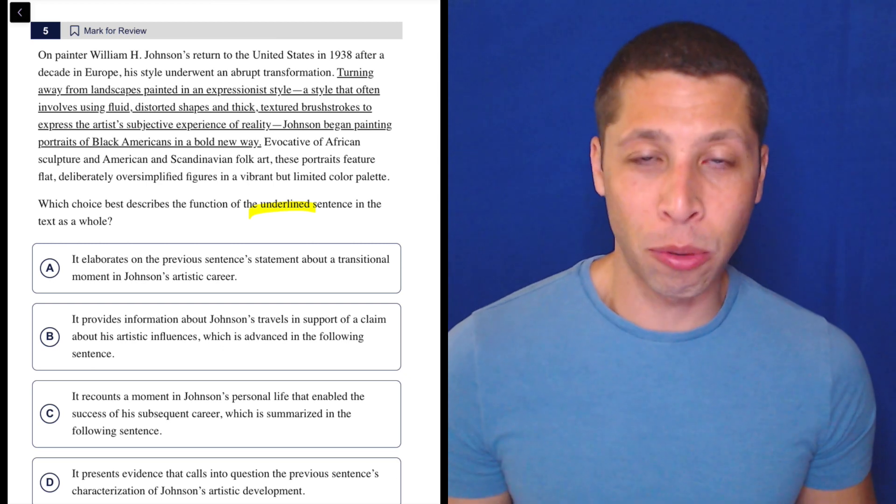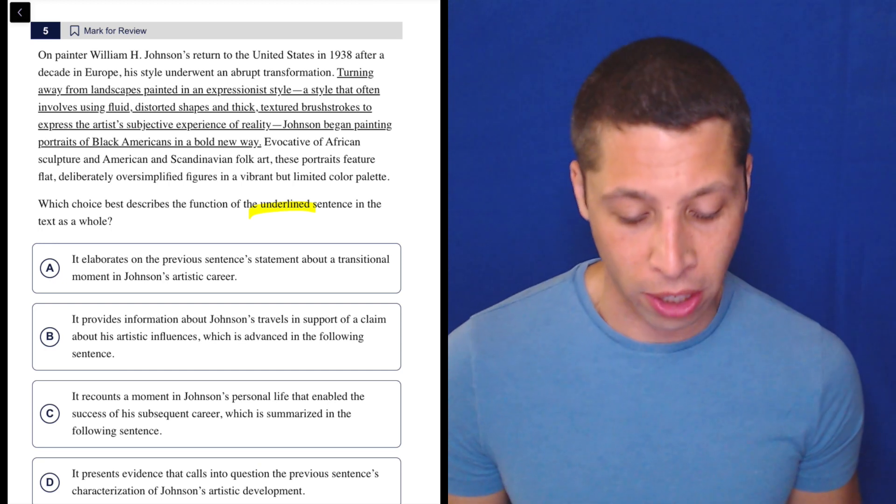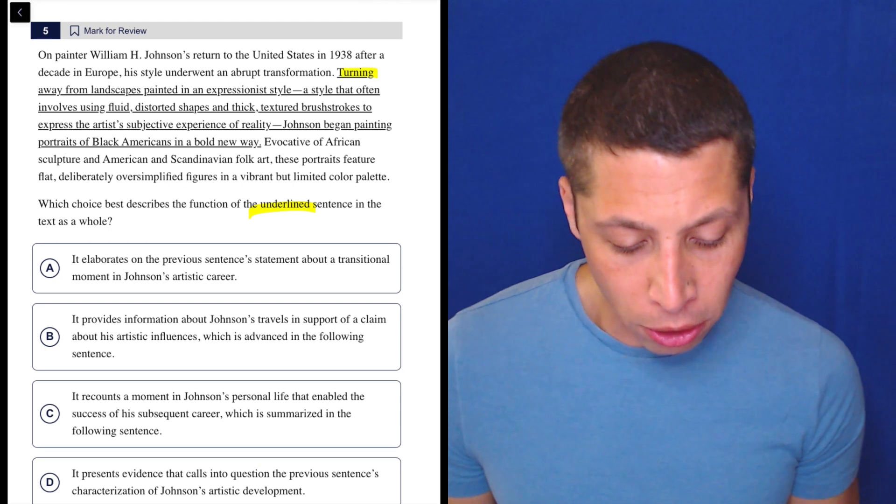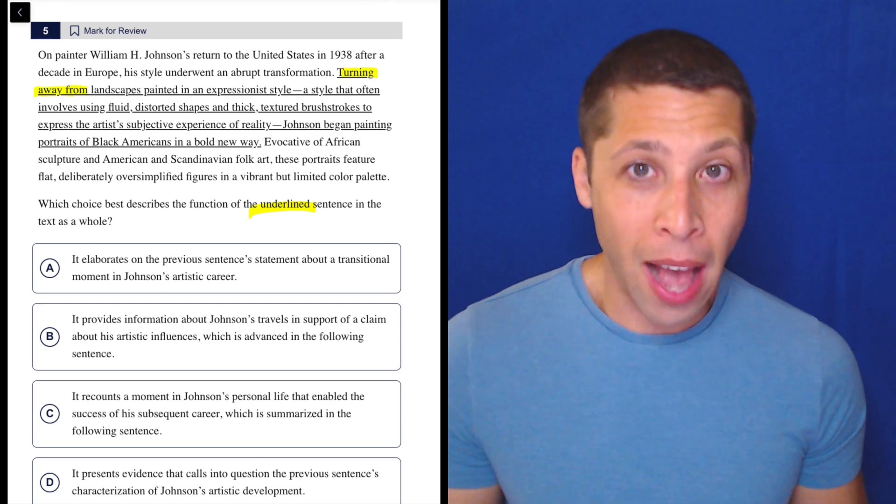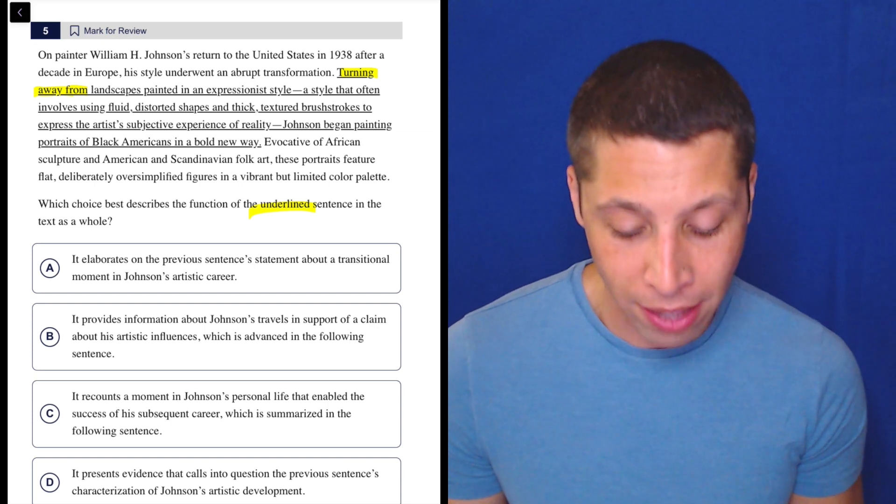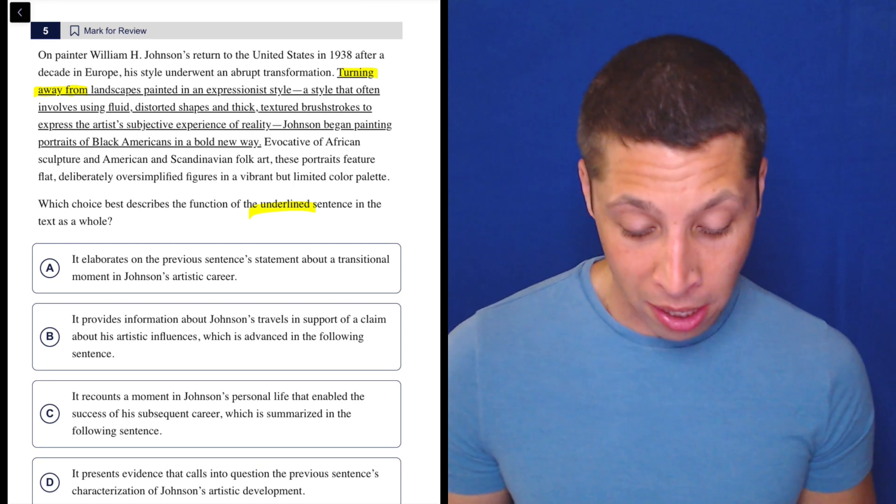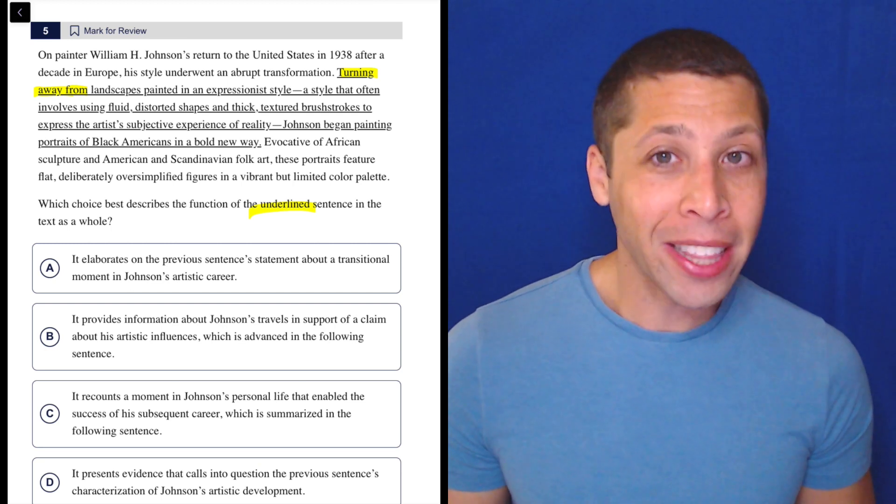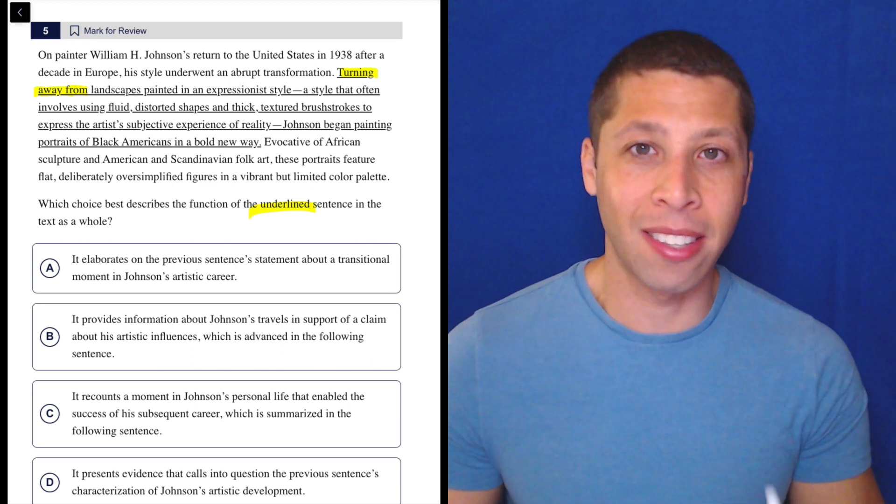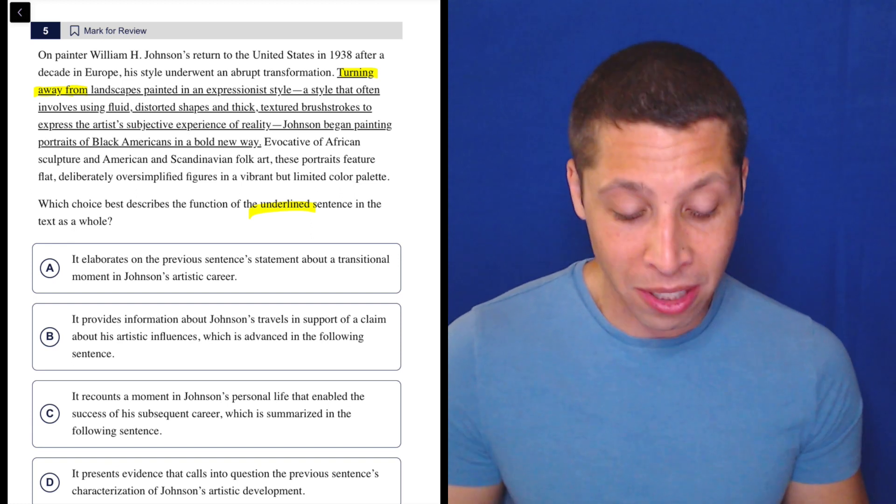Just to be clear, as I was reading that, I was really focused on very specific parts of this whole passage and that underlined portion. Specifically, I kind of ignored the middle and was like, okay, turning away from something, right? So that indicates a change. We did have a transformation mentioned right before that. So that's kind of reiterating that idea. So then we get a long description of his expressionist style, but I don't think that that's the main part of the sentence because that's in those little dashes, right? That's telling us this is an interruption. This is an extra piece of information.